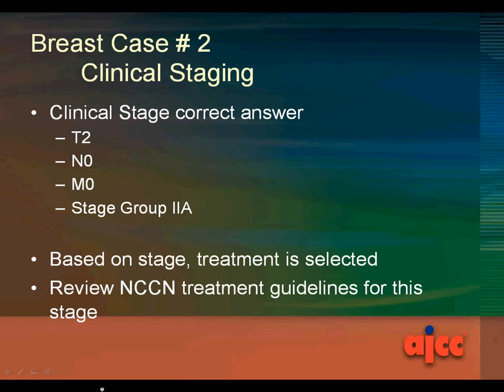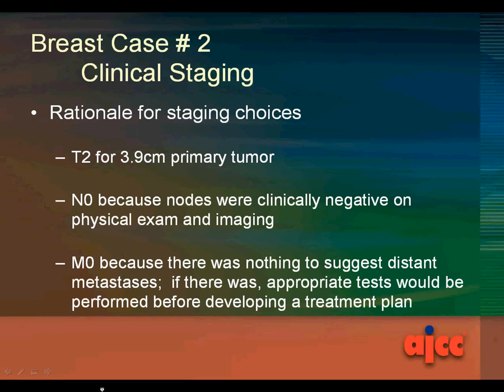Based on stage, the treatment is selected and NCCN treatment guidelines should be reviewed. The rationale for the staging choices: T2 for a 3.9-centimeter primary tumor; N0 because the nodes were clinically negative on physical exam and imaging; M0 because there was nothing to suggest distant metastasis. If there was, appropriate tests would be performed before developing a treatment plan.